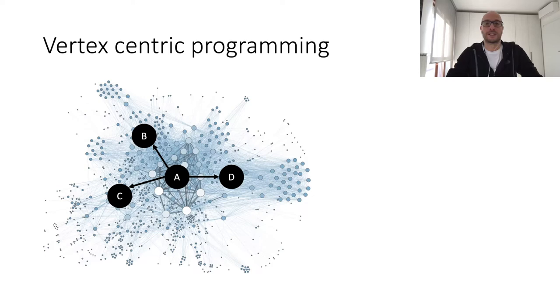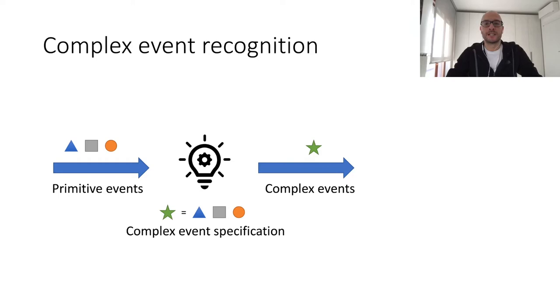Now, the second technology we consider is complex event recognition. Complex event recognition is the task of recognizing situations of interest, or complex events, from possibly unbounded streams of observations, or primitive events. Complex events are defined starting from primitive events using some complex event specifications which enable us to predicate on the type, content, and most importantly, on the order and temporal distance of primitive events. So, the idea is we want to specify situations of interest, and to do so, we must be clear about what brought to that situation, which sequence of events, sequence of primitive events, brought us there.